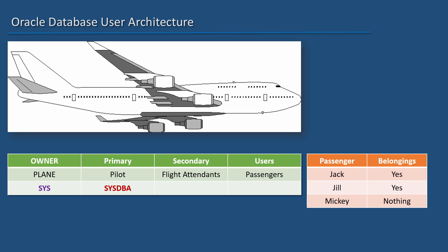Any user who has been granted the SysDBA privilege can start and stop the database. Generally, the senior members of the database administrator's team in a company will have SysDBA privileges. Then, the database administrator team may have junior members who do regular database administration tasks. They may not have privileges to the internal objects like SysDBAs, but can still help with regular database administration tasks. These people are like the flight attendants.